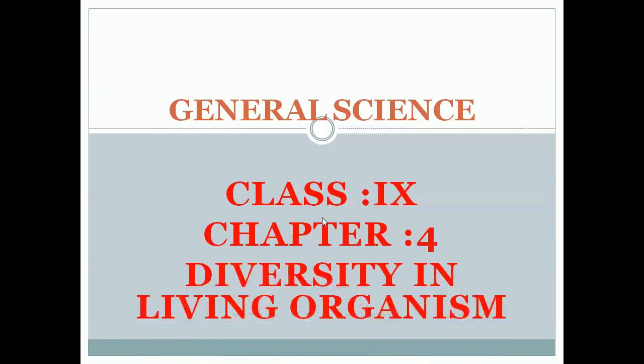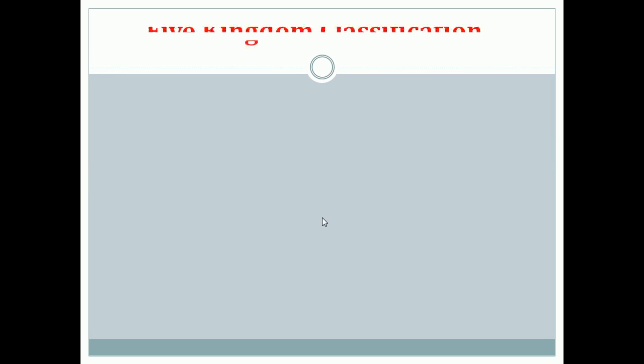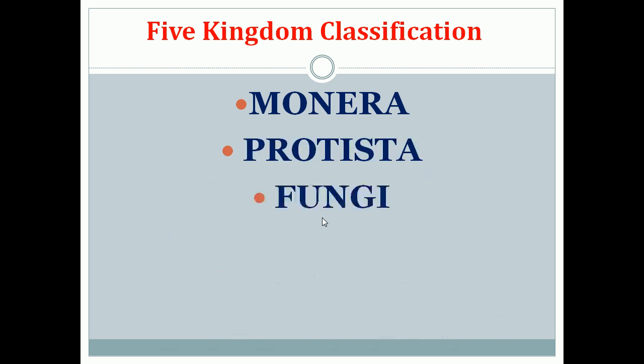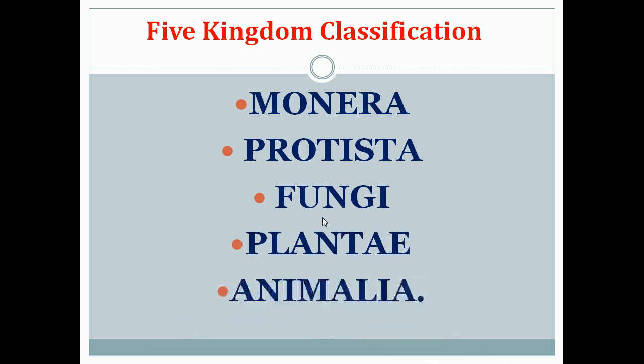Good morning children. Last class we have seen about the classification of five kingdoms — Whittaker's five kingdom classification. So according to Whittaker, the living organisms are classified into five: Monera, Protista, Fungi, Plantae and Animalia. Last class we have seen about Monera, Protista, Fungi and the classification of Plantae.